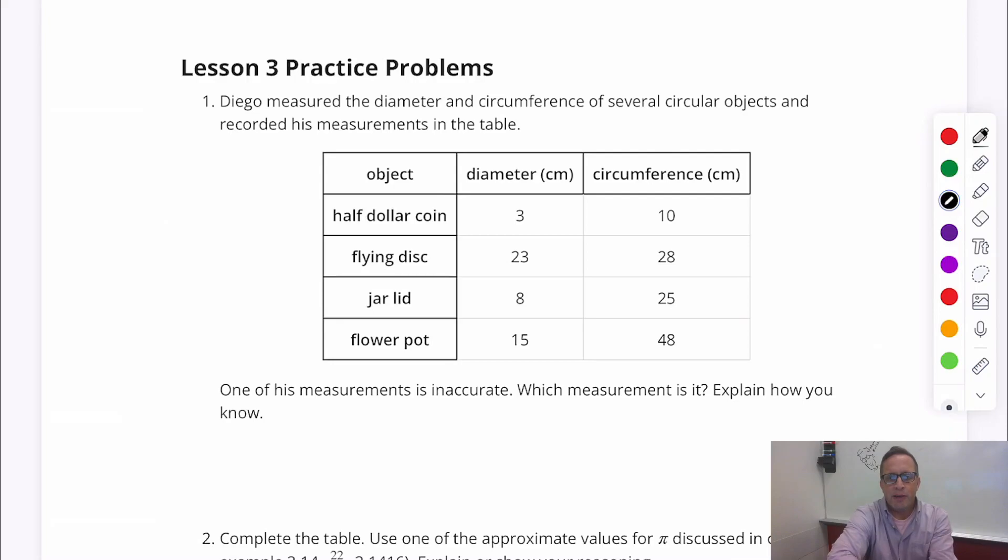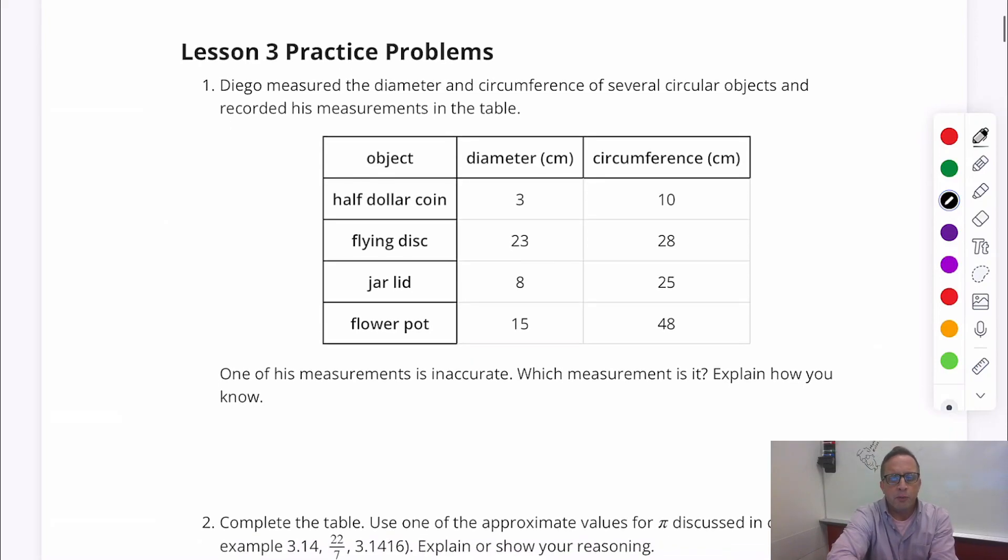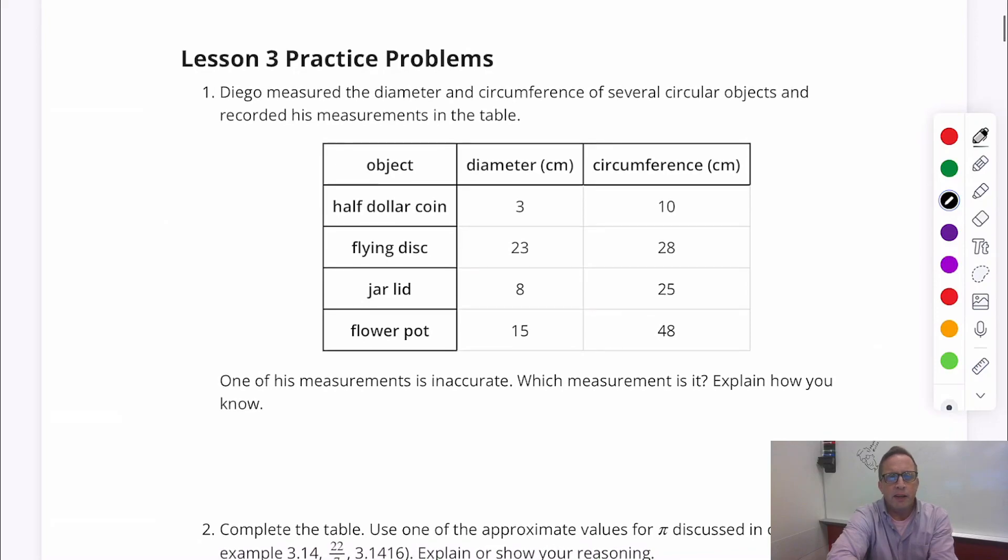Alright, so we've got a half dollar coin, flying disc, also known as a frisbee, but that's a brand name, jar lid, and a flower pot. Alright, so we've got those things there, and Diego measured the diameter and circumference of several circular objects.